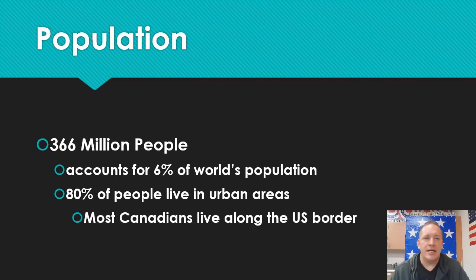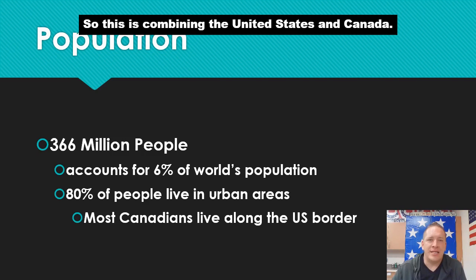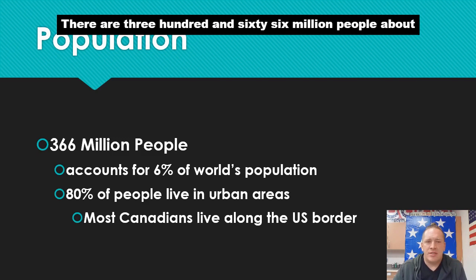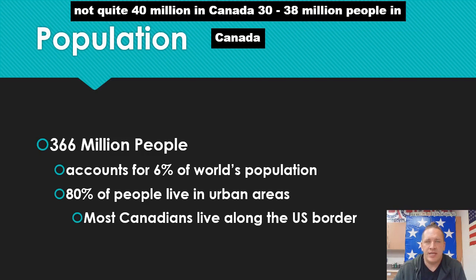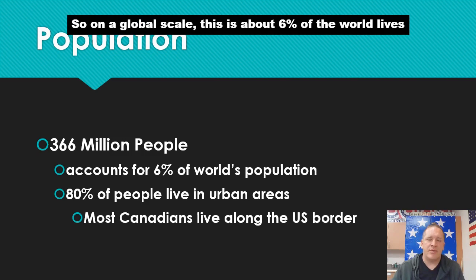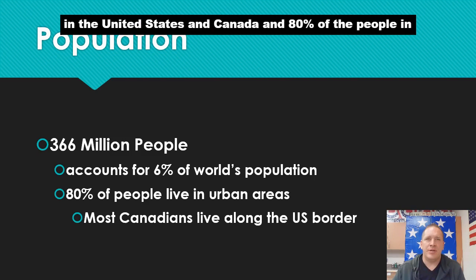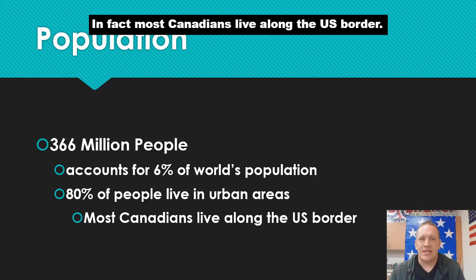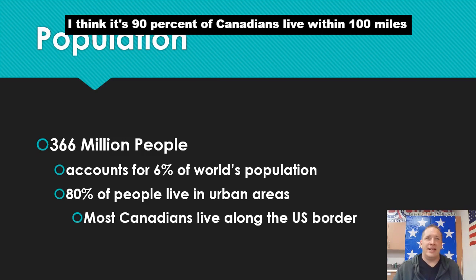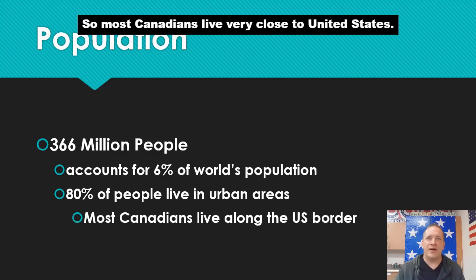Let's take a look at population — another part of human geography. Combined, the United States and Canada have 366 million people: about 38 million in Canada and the rest in the United States. On a global scale, this is about 6% of the world. And 80% of the people in these two countries live in urban areas — cities. In fact, most Canadians live along the US border — about 90% of Canadians live within 100 miles of the United States.